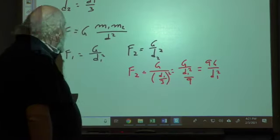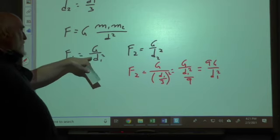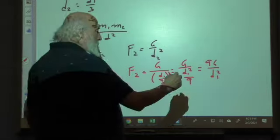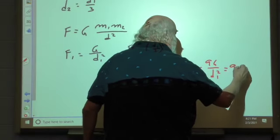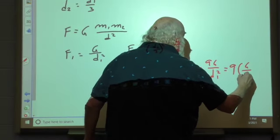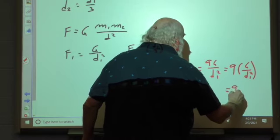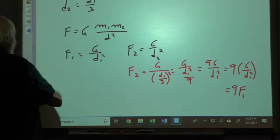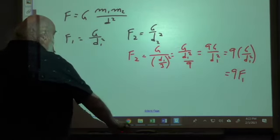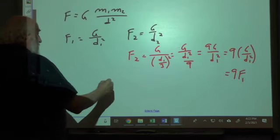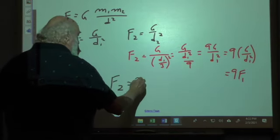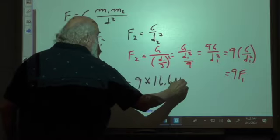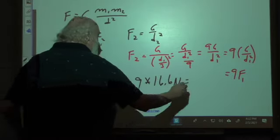Now if I take a look at this right here, G over d1 squared is defined as F1. So that means that this is going to be 9 times G over d1 squared, which is 9 times F1. So that means that F2 is going to be 9 times 16.6 newtons, which is 149 newtons.